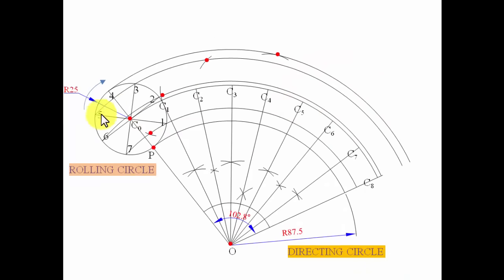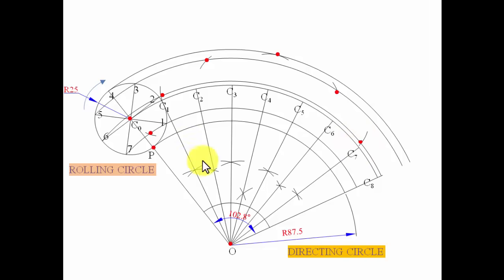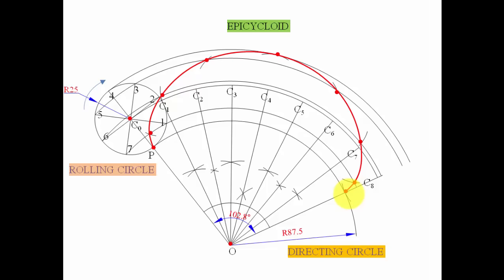Continuing: with C5 as center, we intersect the arc through point five to get P5. C6 gives P6, C7 gives P7, and finally C8 as center gives P8, which just touches the arc. Joining all the points P, P1 through P8, in sequence gives the required curve — popularly known as an epicycloid.